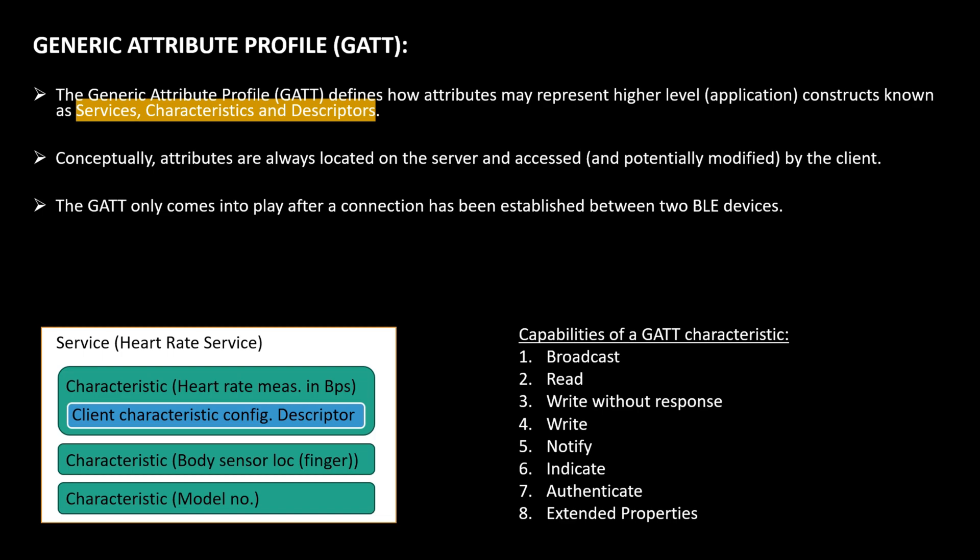A few key points to remember: attributes are always located on the server and accessed by the client. GATT only comes into play after a connection has been established between two BLE devices. The capabilities of GATT include broadcast, read, write without response, write, notify, indicate, authenticate, and extended properties. For example, a server can send a read command to the client to read heart rate measurements, and the client will respond with the value. We will practically explore all these capabilities and sniff data over the air in coding sessions.